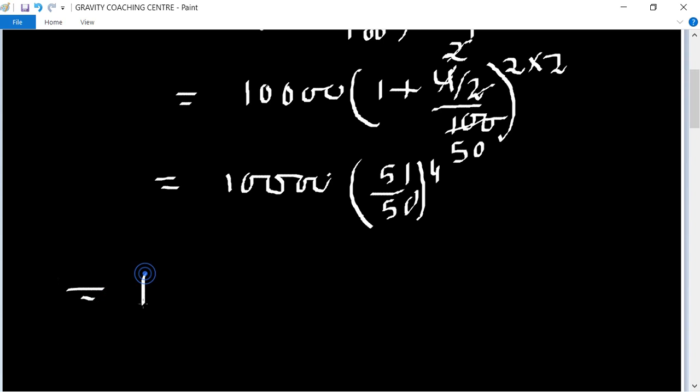Equals ten thousand multiplied by 51/50 four times: 51/50 times 51/50 times 51/50 times 51/50.